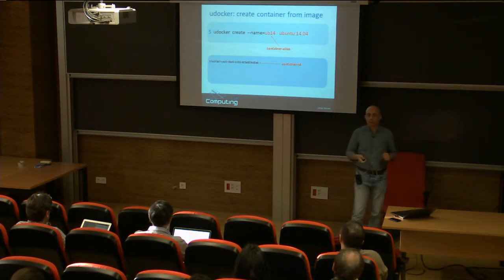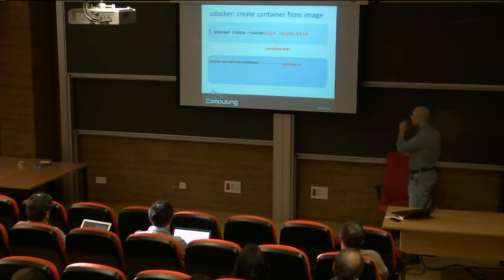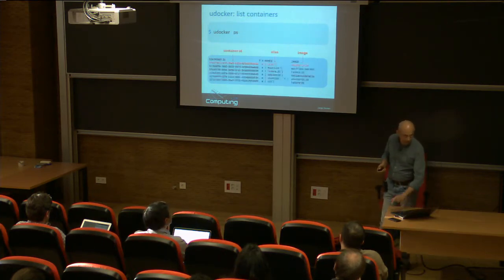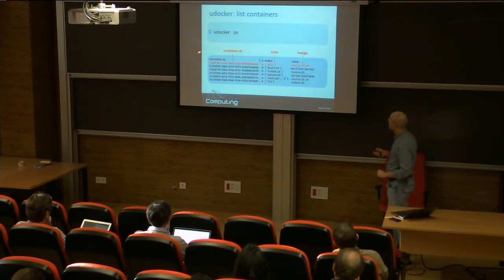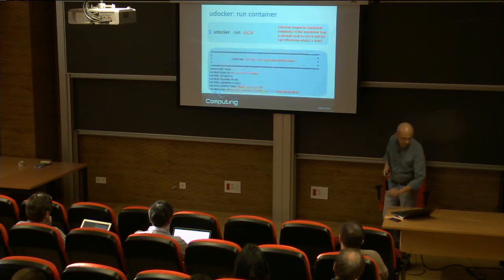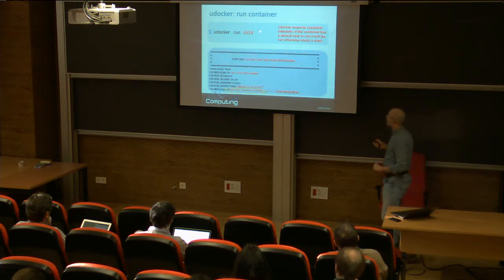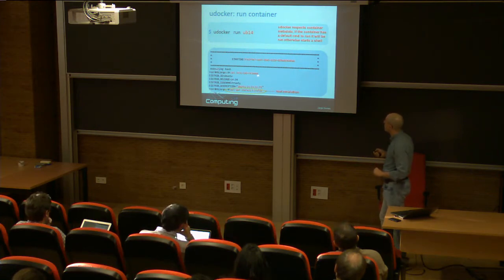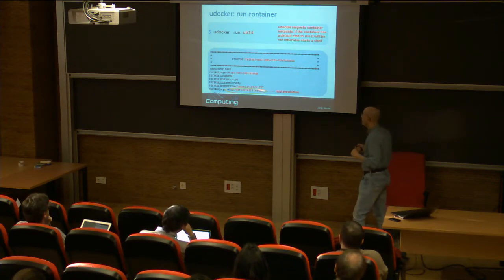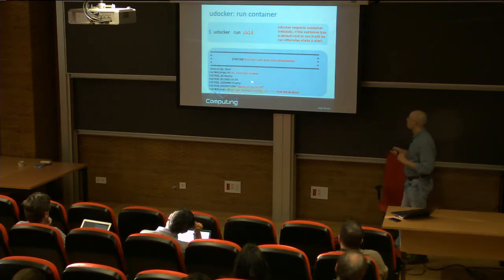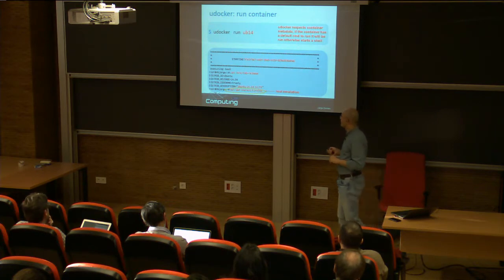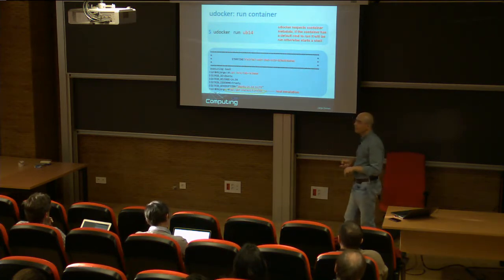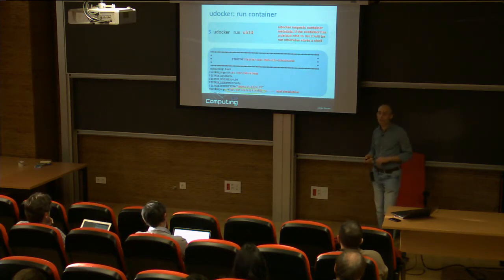You can take an image and extract it to the file system with uDocker create — that's the same thing Docker does. You get a file system tree within your home directory somewhere under dollar-home/.udocker with the container ready to be run. You can see the container is there with a certain ID and alias. Then you can run it. Running Ubuntu 14, since the container does not have any command to be run, it starts a shell. You can see it is Ubuntu 14, and you can even install software — you can do an apt-get install Firefox and it will install Firefox, and if you run Firefox in there it will run with acceleration.